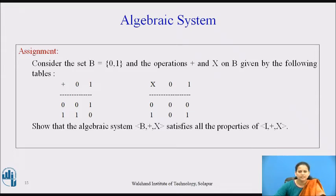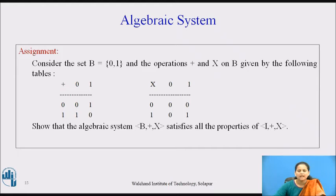For this algebraic system, show that (B, +, ×) satisfies all the properties of (I, +, ×), where I is the set of integers. Apply the same theory and try to list out all the properties for this algebraic system as that of the set of integers.